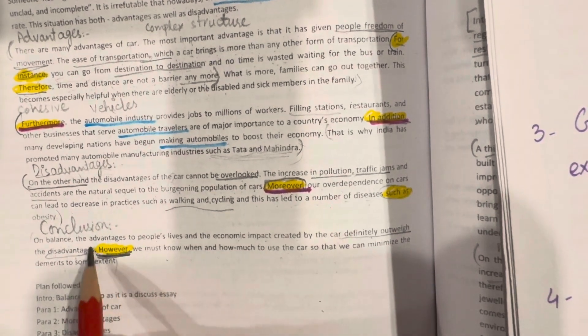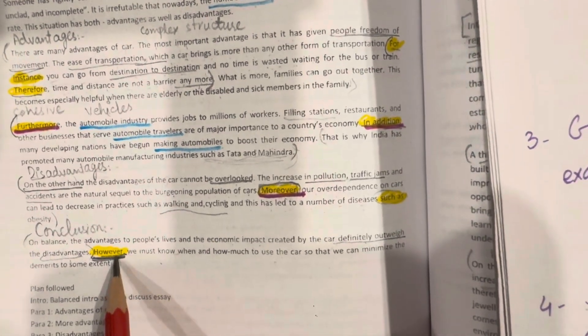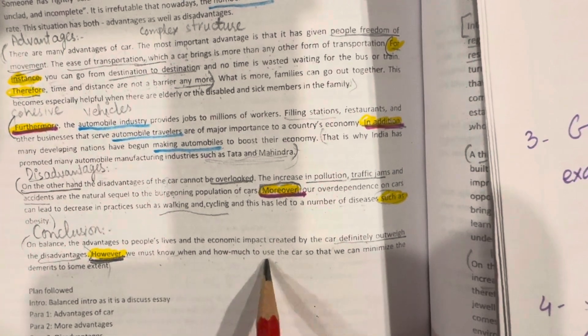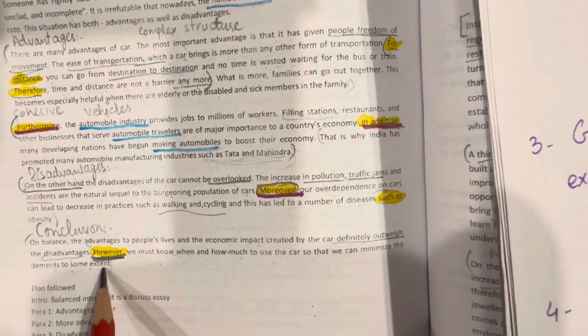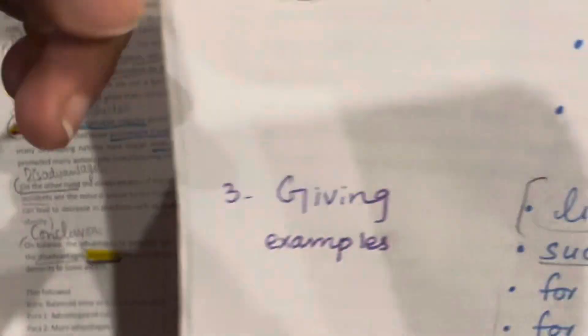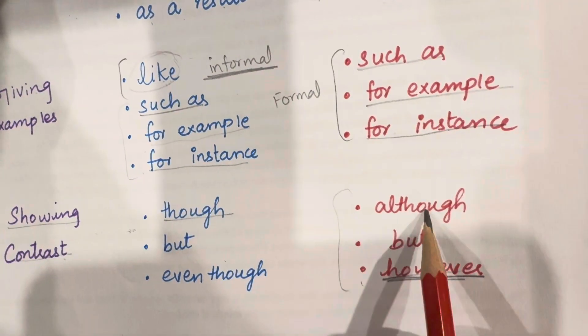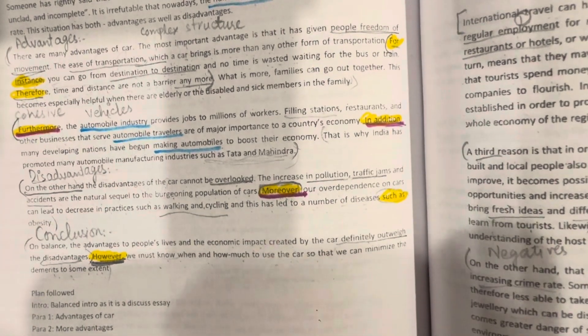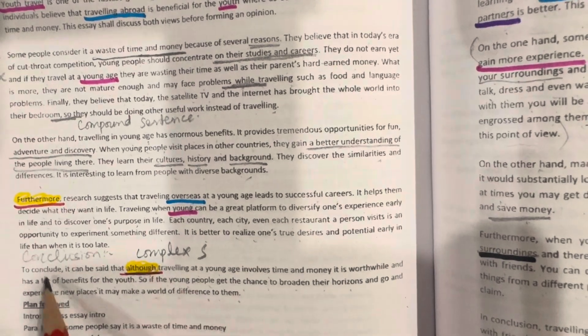However, we must know when and how much to use the car so that we can minimize the demerits to some extent. Okay. Now, you understand how we have to use these words in our speaking and in writing: although, but, however for showing contrast. And also see this example for although.